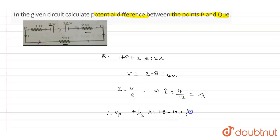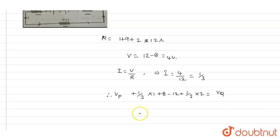So Vp minus Vq value will be equals to 3 volts.